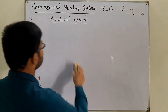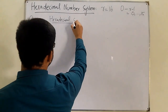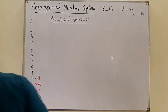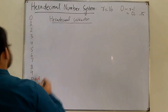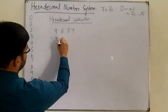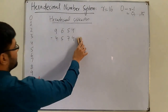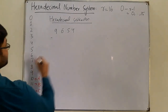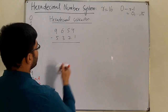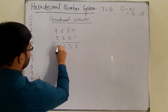The next operation is hexadecimal subtraction. If no borrow is involved, it's straightforward. For example, 9654 minus 5321: 4 minus 1 is 3, 5 minus 2 is 3, 6 minus 3 is 3, and 9 minus 5 is 4. The answer is 4333 with no borrow needed.